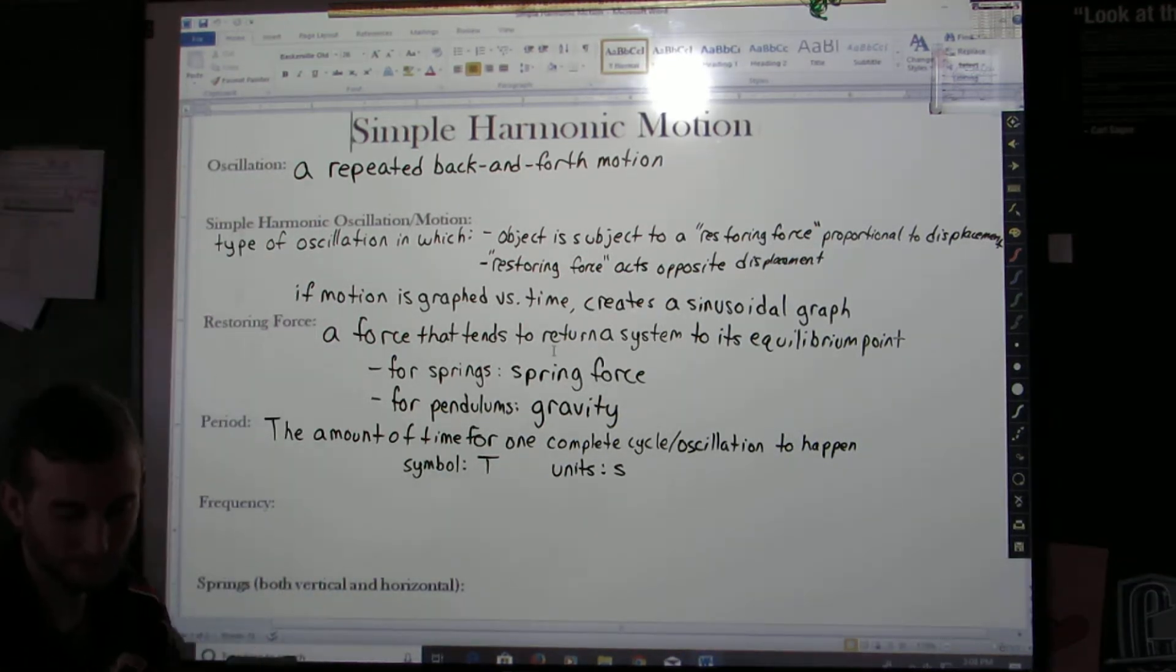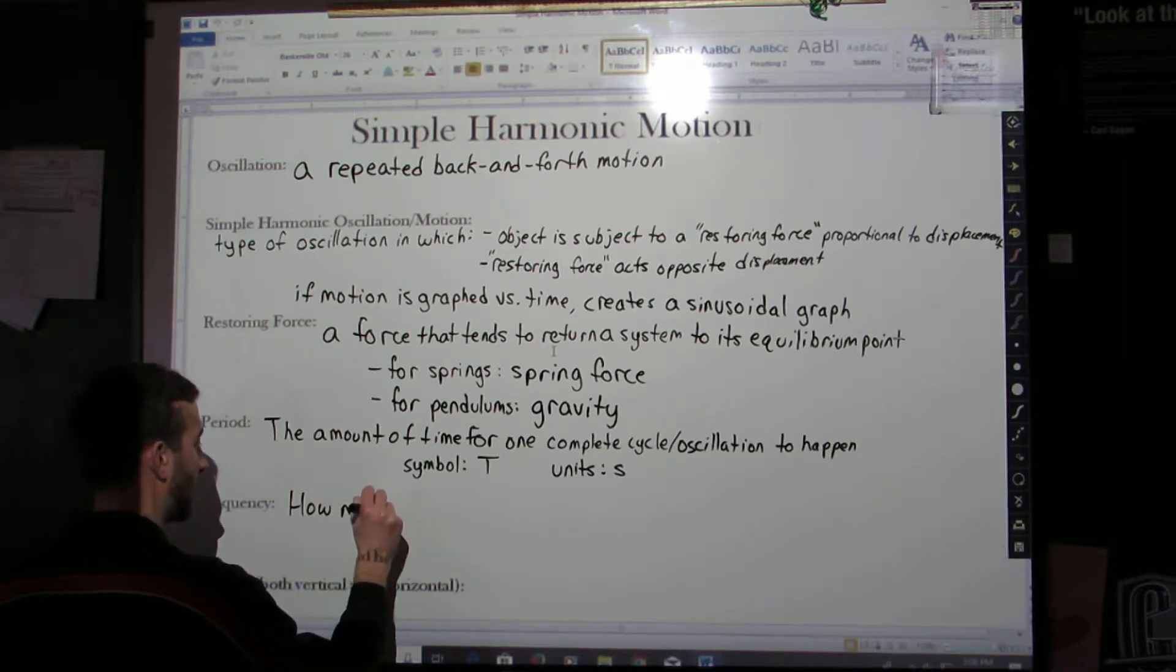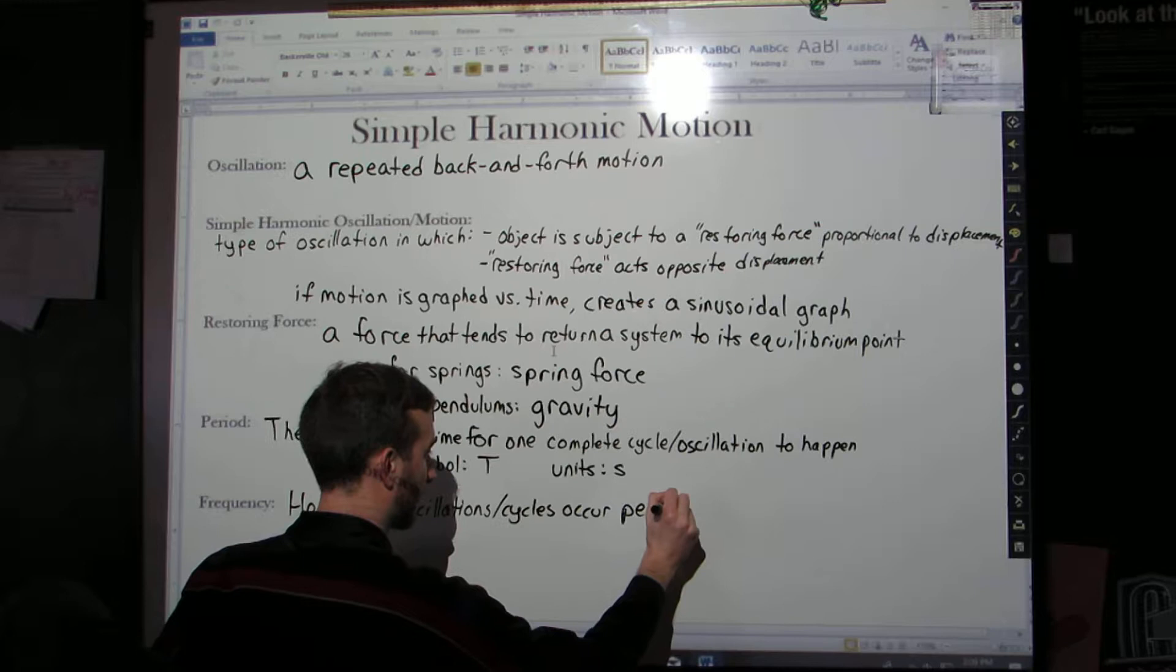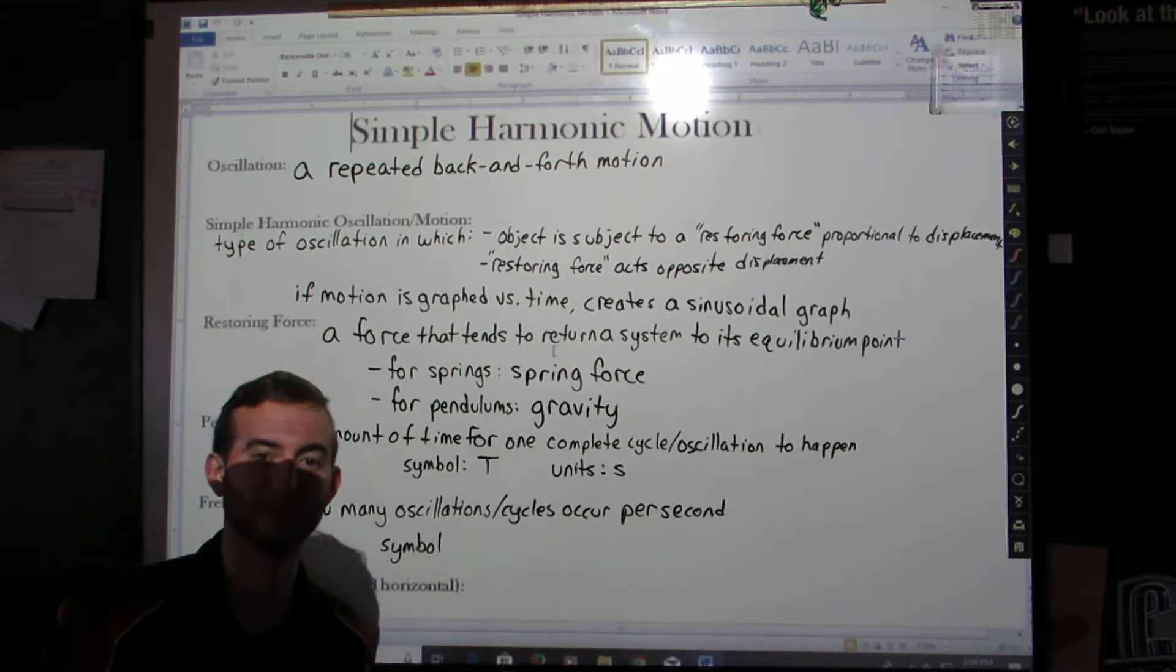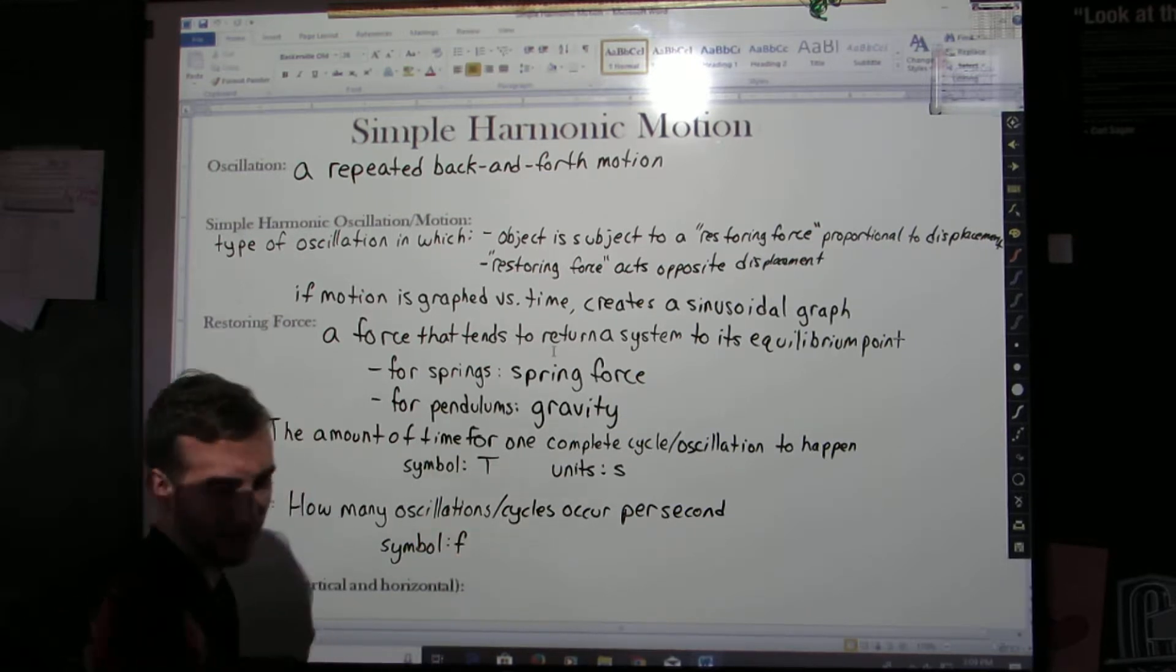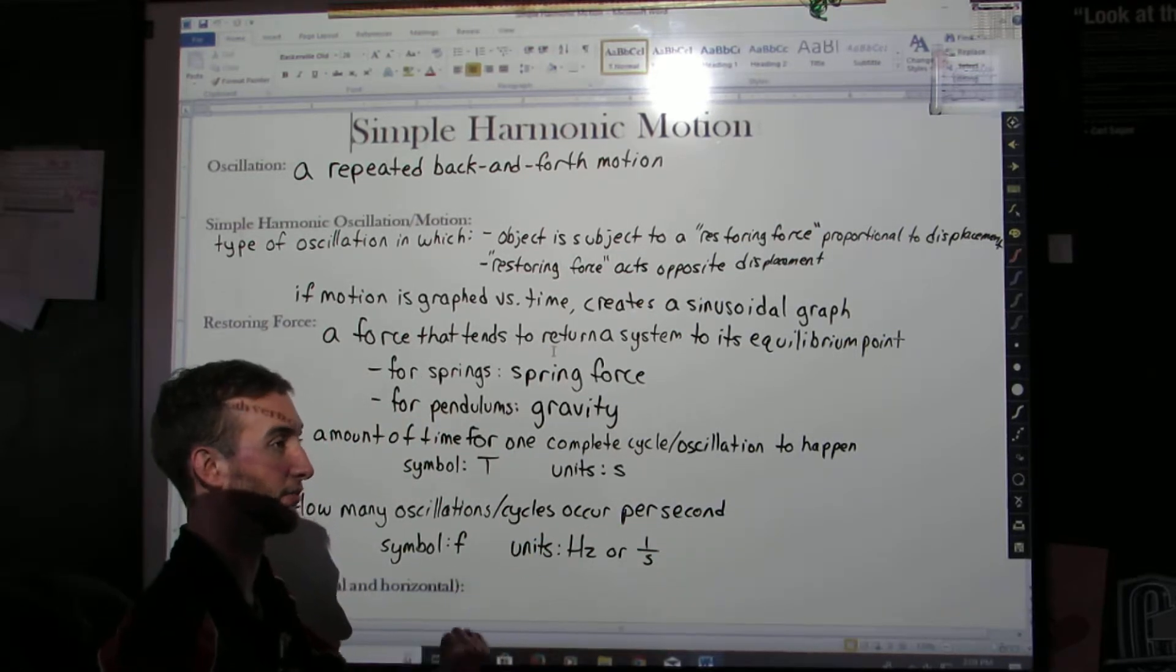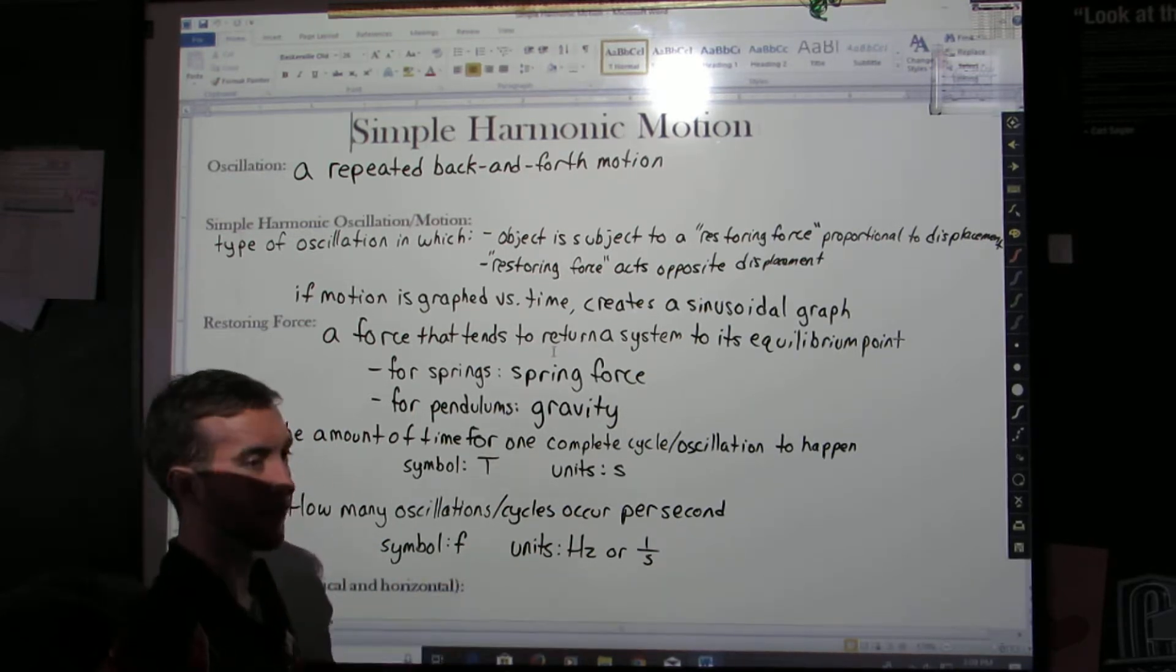The last word that we will define is frequency. Frequency is fairly basic. Frequency is how many oscillations or cycles occur per second. So essentially you are counting how many times something happens per second. It could be a very high number. It could be a fraction. It just means how many cycles happen per second. The symbol is a lowercase f, and the units are hertz, or one over seconds, per second. You are counting something per second, one over second.